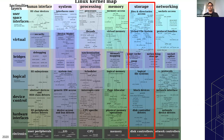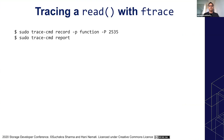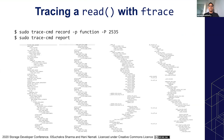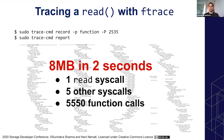This brings us to what actually happens when a call is made. We start with something simple: a read syscall. We'll use a tool called ftrace and record what's happening. The moment the read syscall starts, we record the whole control flow inside the Linux kernel. What we get is a big chunk of data — 8 MB of data for just two seconds. For just one read syscall, there were five other syscalls that happened in that small duration, and all in all there were 5,550 function calls.